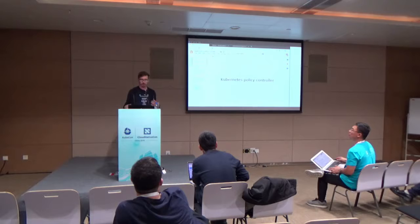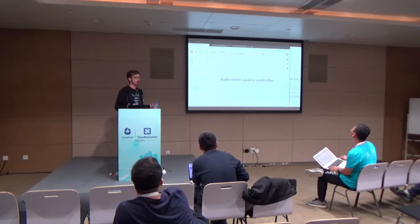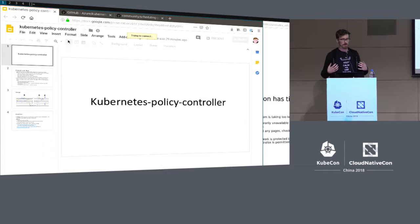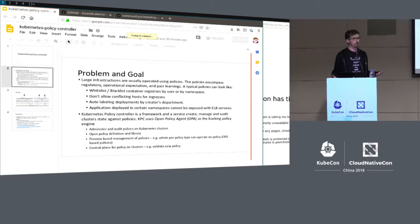What I'm going to talk about for the next few minutes is a new project that has come out of work we've done within the Open Policy Agent over the past two years, and that is now being carried out by some folks at Microsoft in the Azure Kubernetes team. These slides were prepared by somebody working on the Kubernetes policy controller, but they do a good job of explaining why this is important.